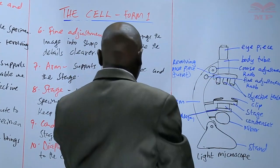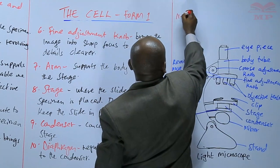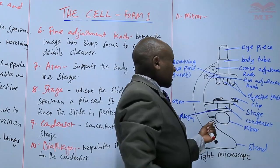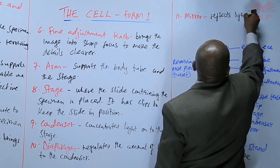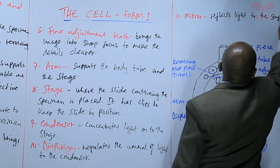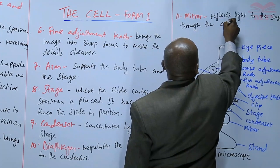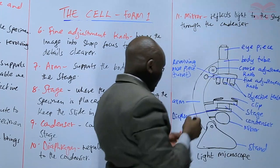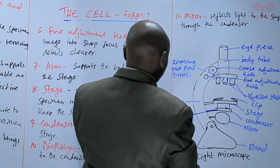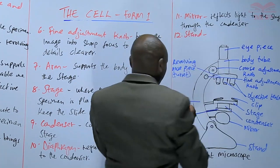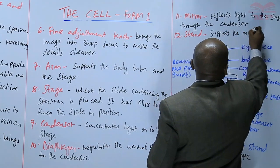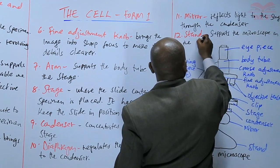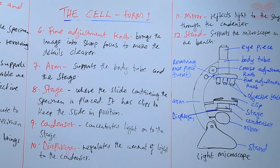Then we have the mirror, which is the one that reflects the light onto the stage through the condenser. Finally, we have the stand, which is the one that supports the microscope on the bench.